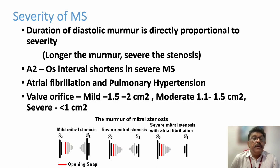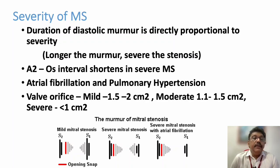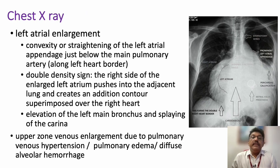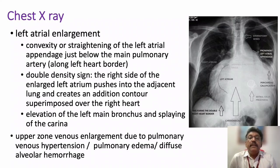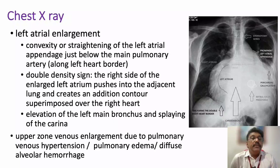In diastolic murmurs, the duration is directly proportional to severity — a longer murmur indicates more severe stenosis. The A2-to-opening snap interval shortens in severe mitral stenosis. Atrial fibrillation with pulmonary hypertension indicates severe stenosis. On echocardiography, the valve orifice area determines severity: mild is 1.5–2.0 cm², moderate is 1.1–1.5 cm², and severe is less than 1.0 cm².